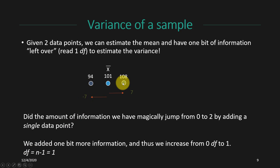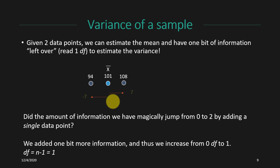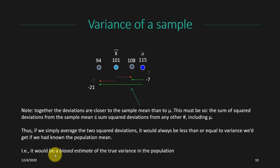By adding that second data point we've gone from zero degrees of freedom to one degree of freedom. We have two data points, but in order to measure the variance we have to estimate the mean, so only one of these scores is free to vary. The degrees of freedom for calculating the variance should be n minus one, which in this case is one. We get that we subtract the number of parameters estimated, but why does dividing by n minus one actually work?